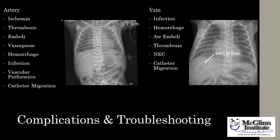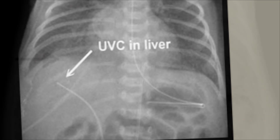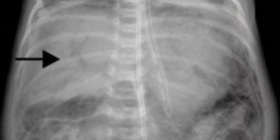Additionally, the UVC could have infection, hemorrhage, air emboli, thrombosis, cause necrotizing enterocolitis, be located in the liver, or migrate further. Being particularly vigilant is very important in order to identify or prevent these potential complications.